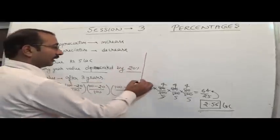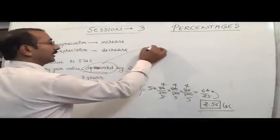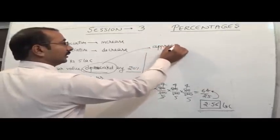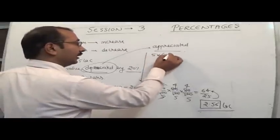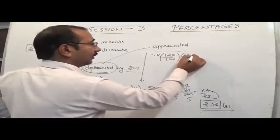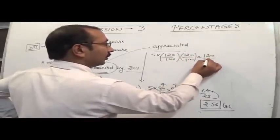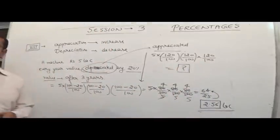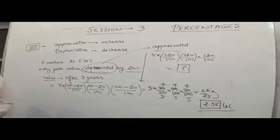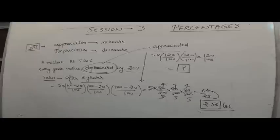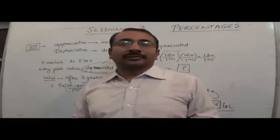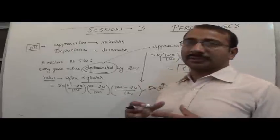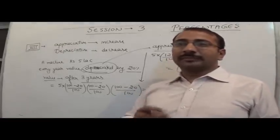On the other hand, if the value is appreciated, replace 80/100 with 120/100 for each year: 5 × (120/100)³. Appreciation means increase; depreciation means decrease. This completes the concept of percentages — after understanding these concepts, you can attempt the questions accurately.